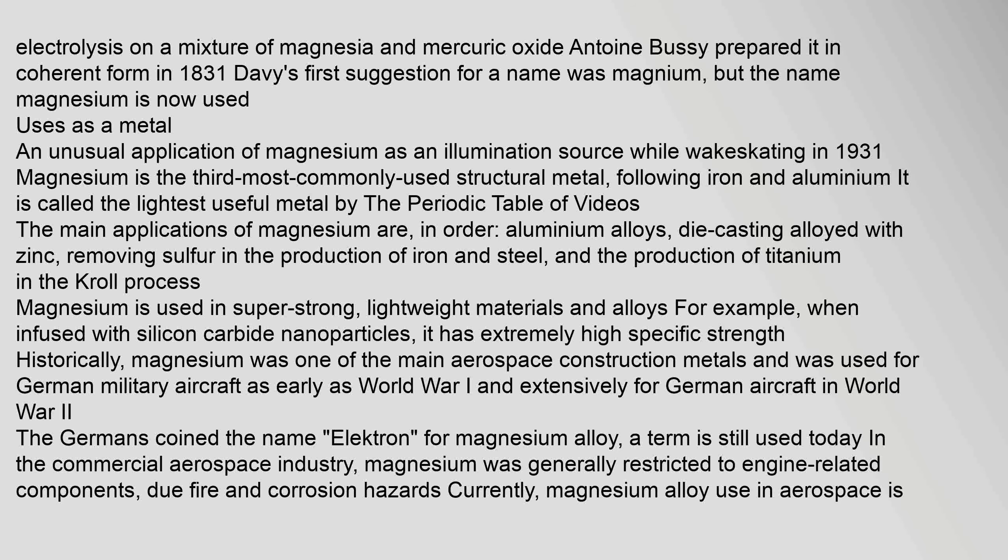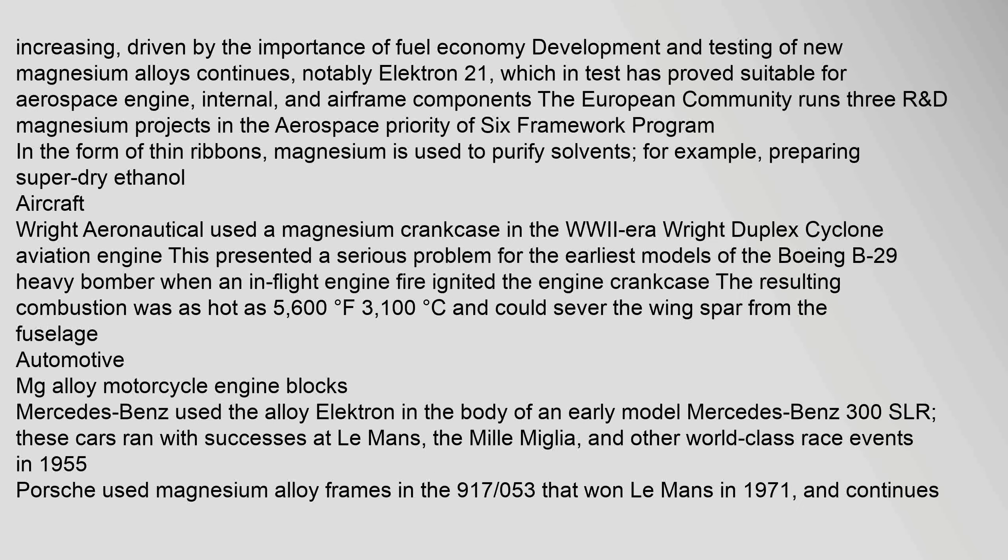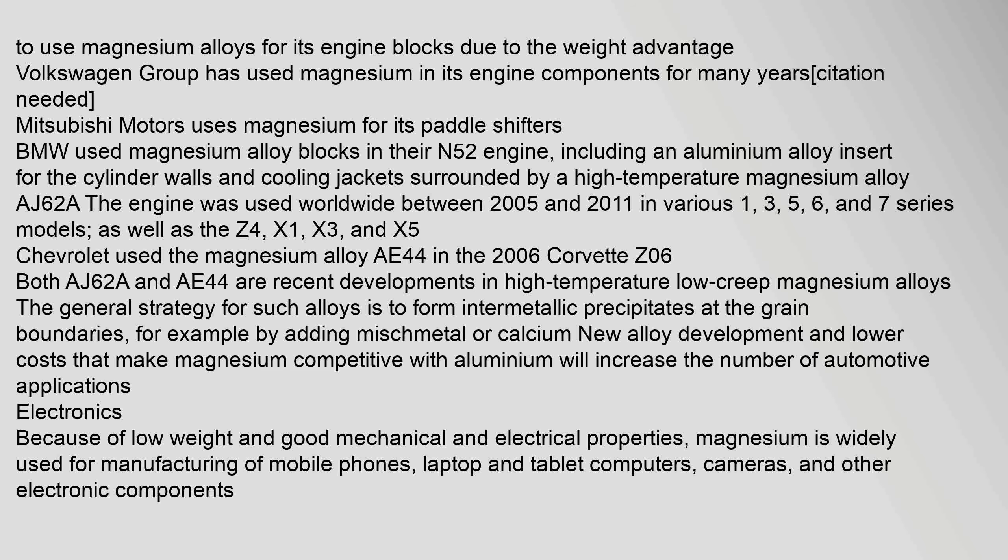Historically, magnesium was one of the main aerospace construction metals and was used for German military aircraft as early as World War I and extensively in World War II. The Germans coined the name 'Electron' for magnesium alloy, a term still used today in the commercial aerospace industry. Magnesium was generally restricted to engine-related components due to fire and corrosion hazards. Currently, magnesium alloy use in aerospace is increasing, driven by the importance of fuel economy. Development and testing of new magnesium alloys continues, notably Electron 21, which has proved suitable for aerospace engine, internal, and airframe components.